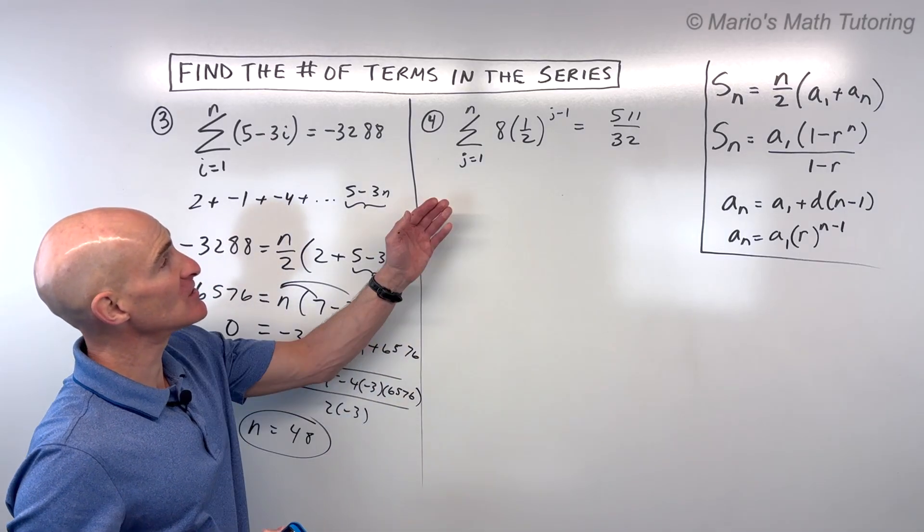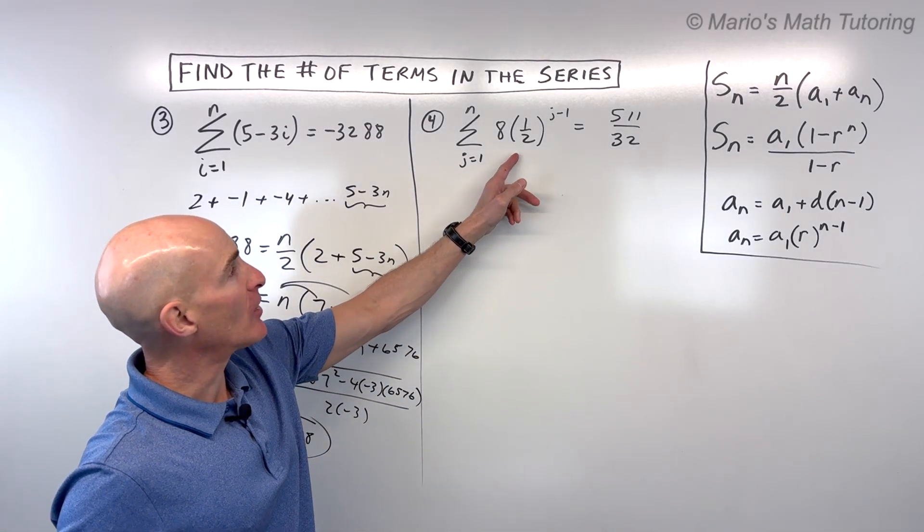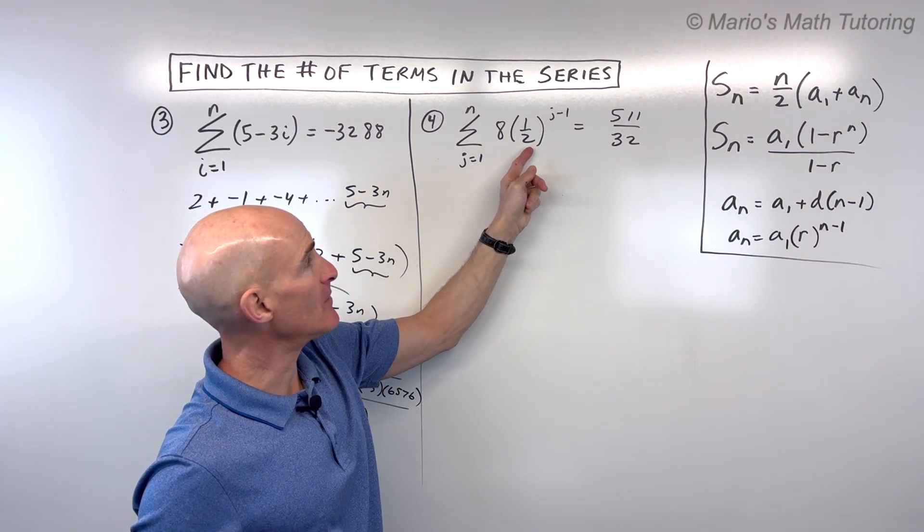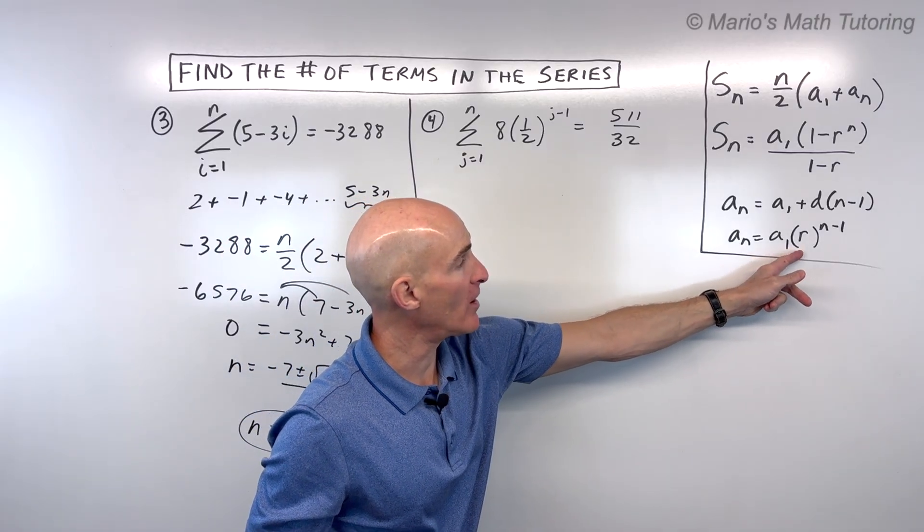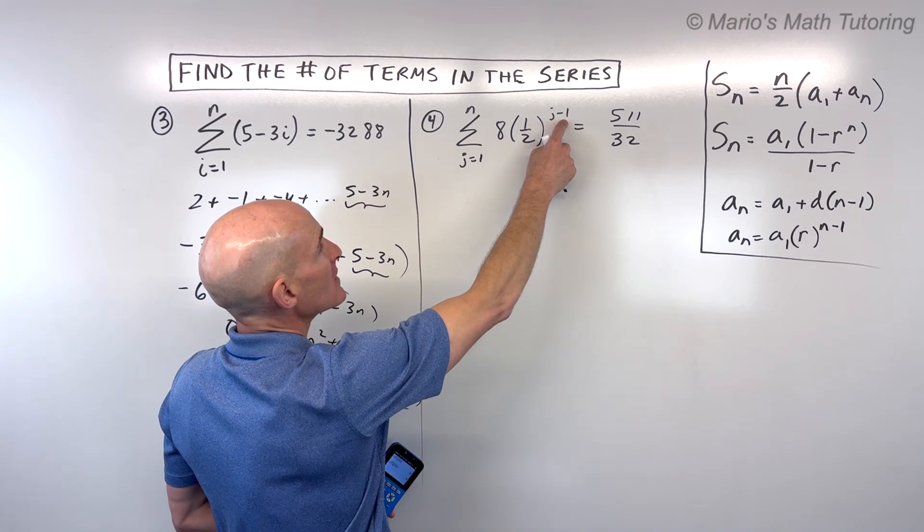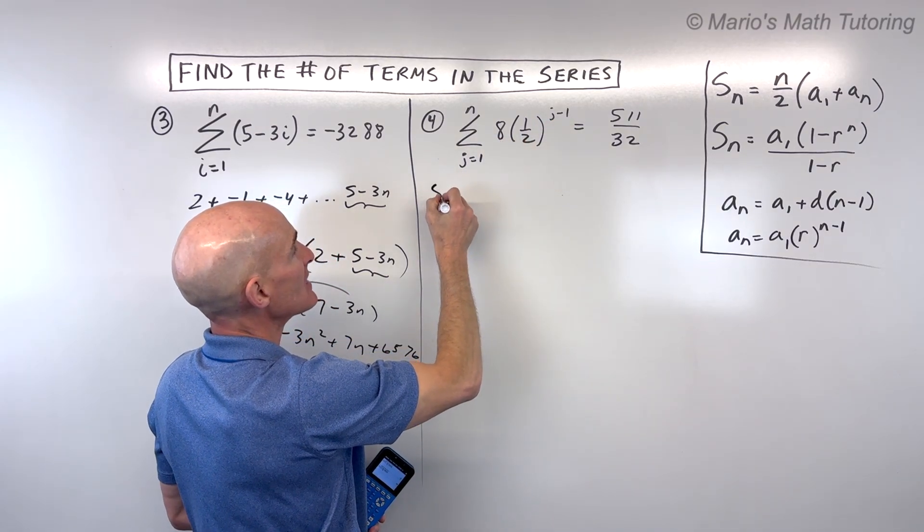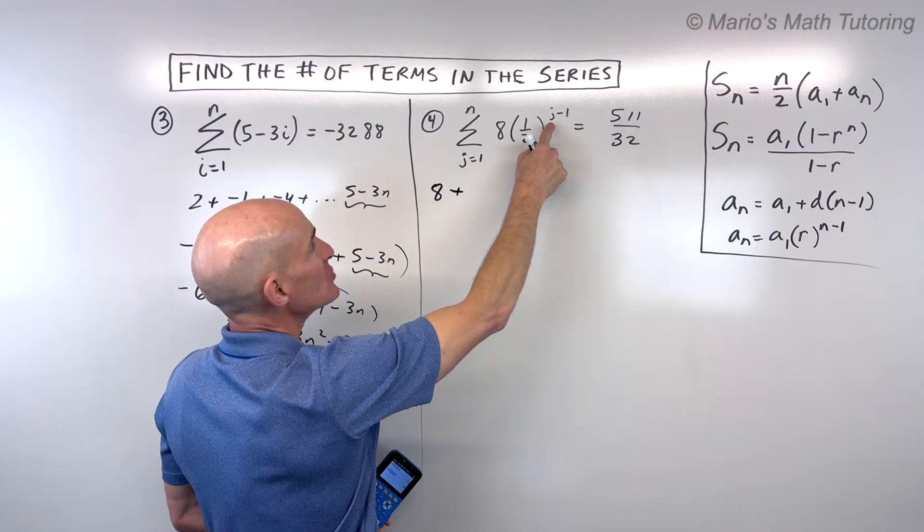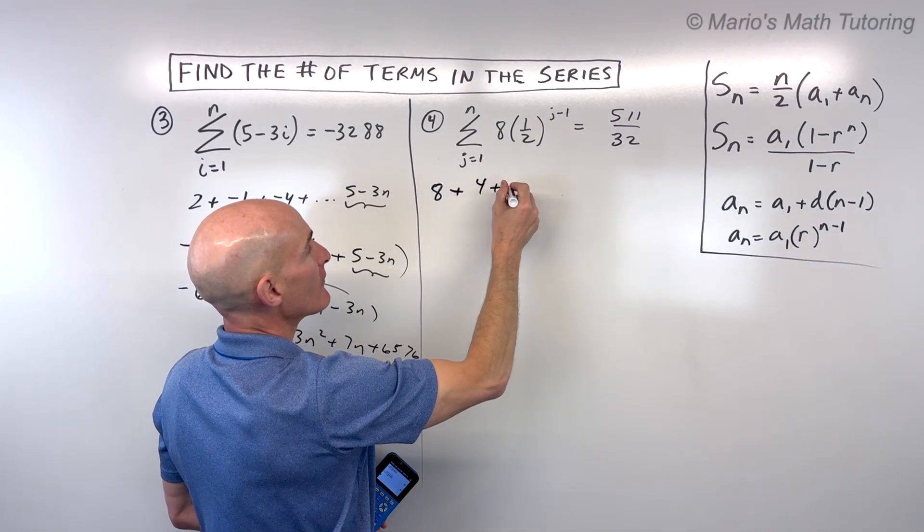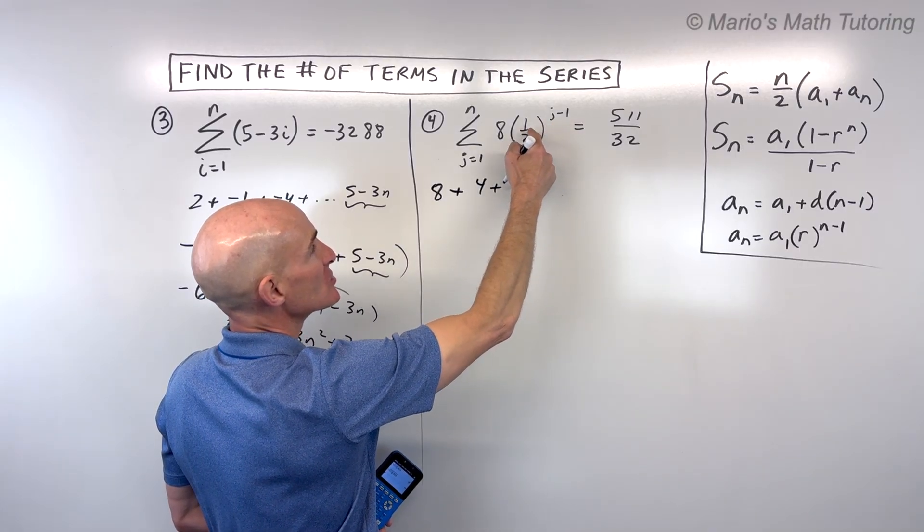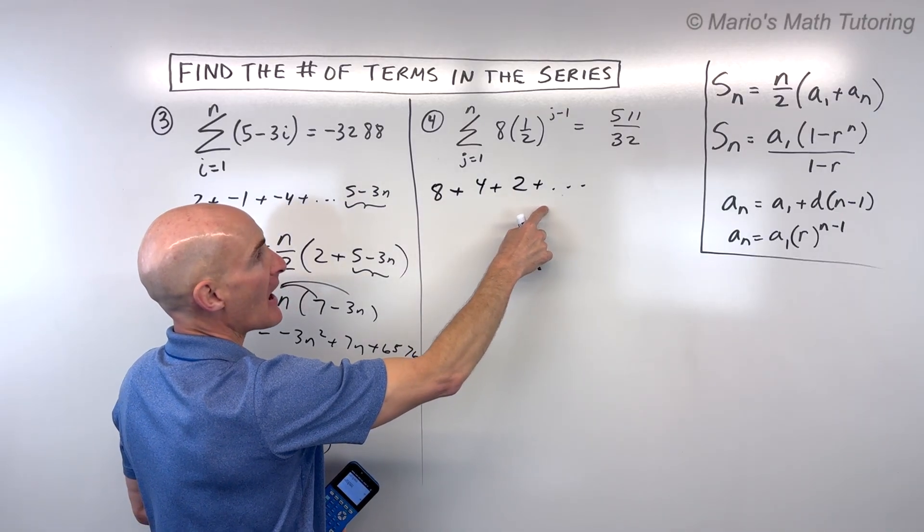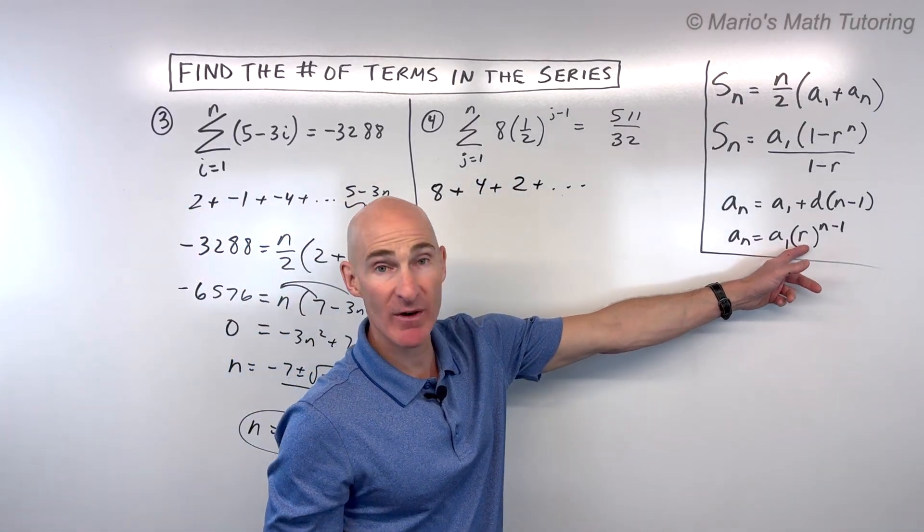Now for number 4, the last one, see if you can do this one. Go ahead and pause the video. This one looks to be a geometric series. Again, notice that a b to the x form, or this a 1 r to the n minus 1 form. Again, you can check it by putting in 1. 1 minus 1 is 0. 1 half to the 0 is 1. Times 8 is 8. That's our first term. If I put 2 in, 2 minus 1 is 1. 1 half to the first is a half. Times 8 is 4. If I put 3 in, 3 minus 1 is 2. 1 half squared is 1 fourth times 8 is 2. And you can see we're multiplying by a half each time, which is this base here, this r value, our geometric ratio.